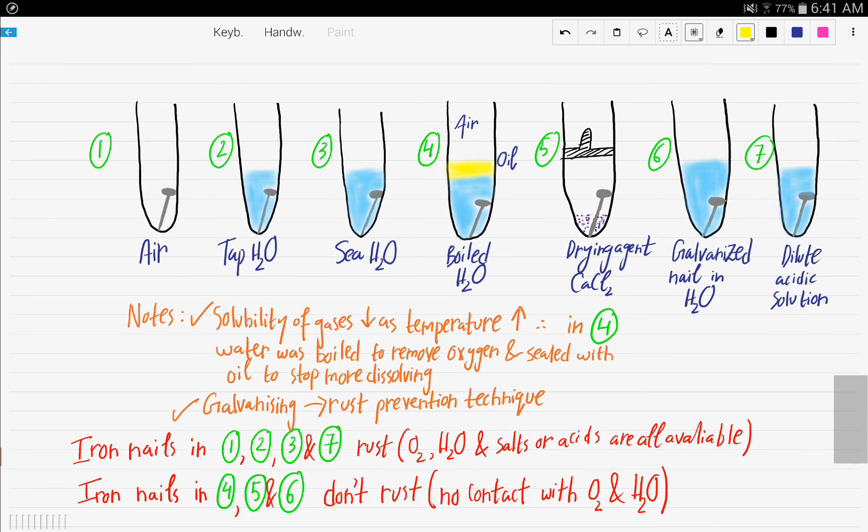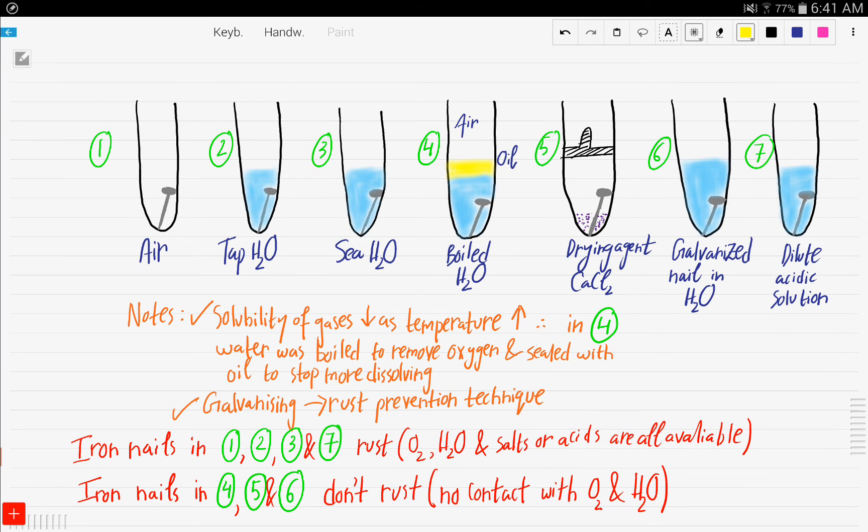So now we're going to carry out a small experiment. We have seven test tubes that contain seven iron nails. These are all iron nails. And in each test tube, there is a different condition. In test tube number one, it is air. The iron nail is placed in air.